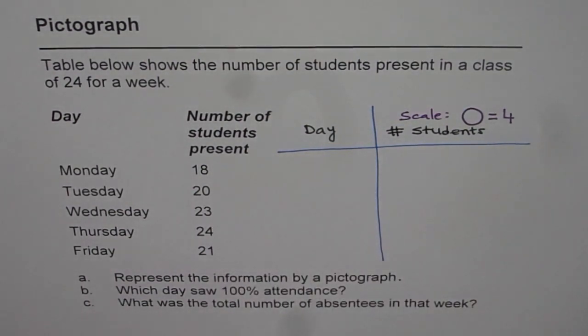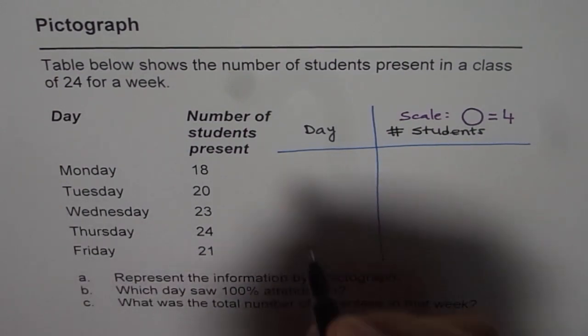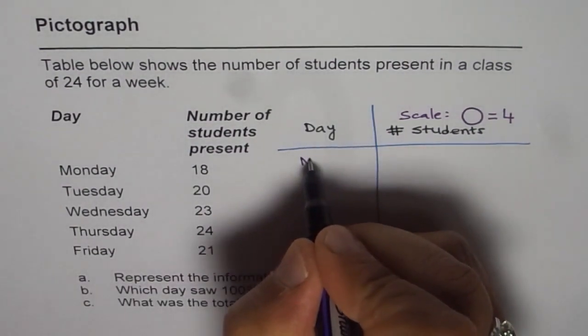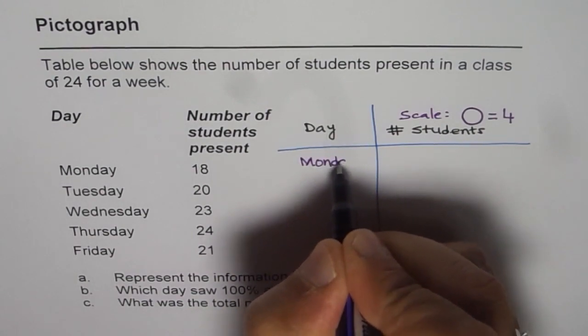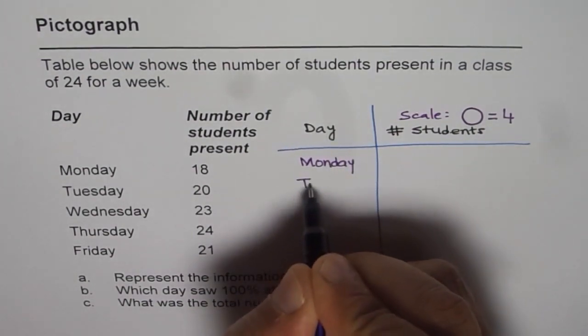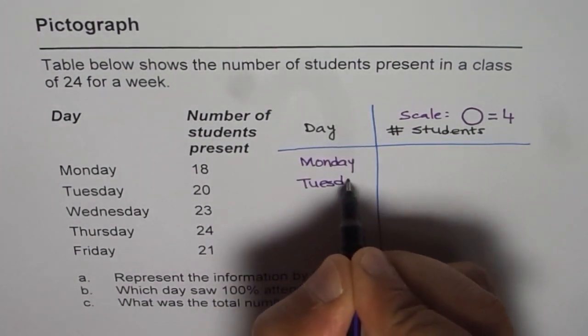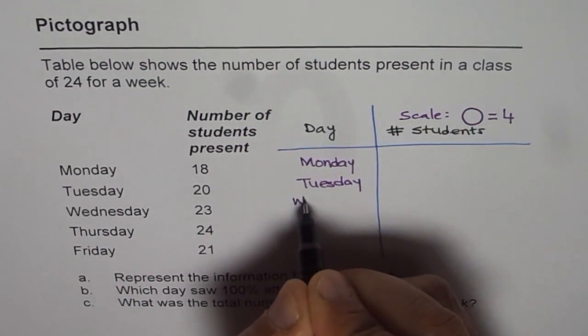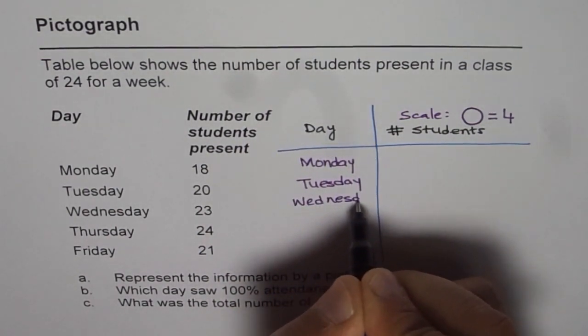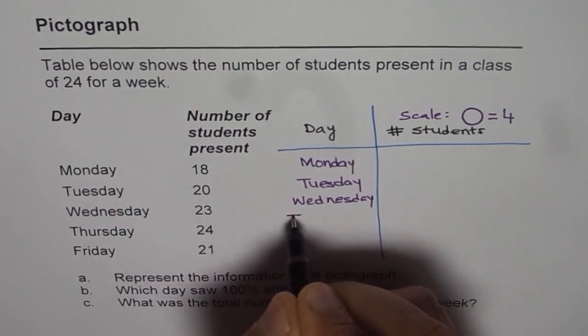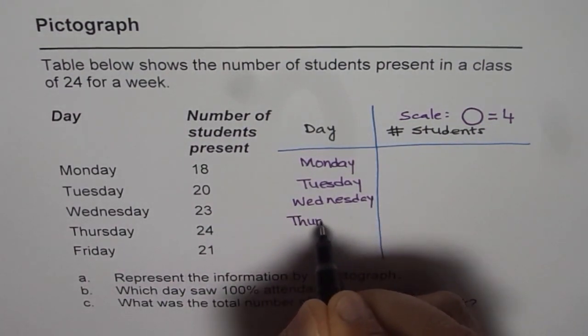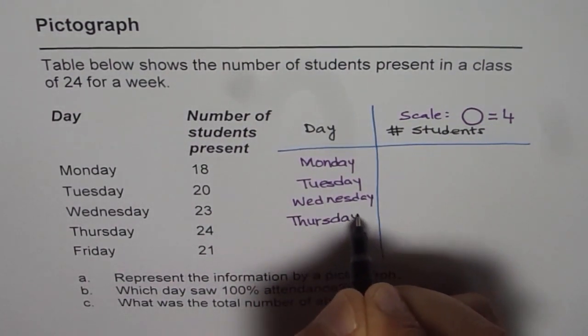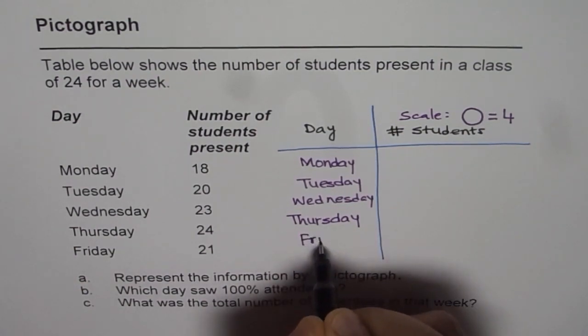Now we can write days on the left side as given in the table. So it is Monday, Tuesday, Wednesday, Thursday and Friday.